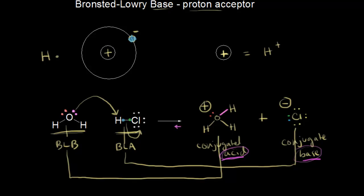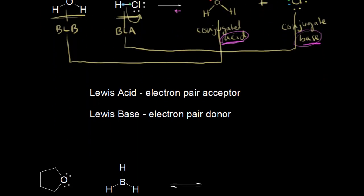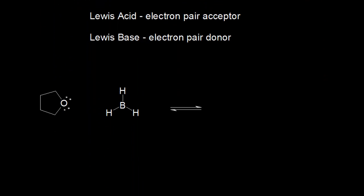Let's look at another definition that's actually more broad: Lewis acid and Lewis base. A Lewis acid is an electron pair acceptor—an easy way to remember this is 'acid acceptor.' A Lewis base is an electron pair donor. A memory trick: a lowercase 'b' flipped around gives you a 'd,' so base is a donor.